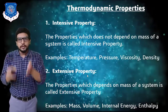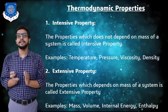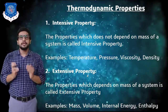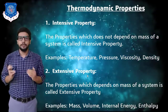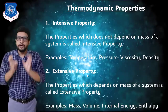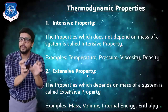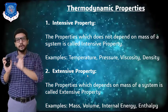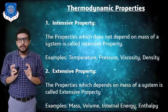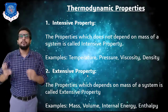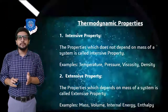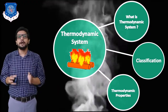The next type is extensive property: the property which depends on the mass of the system. Examples include mass itself, volume, internal energy, and enthalpy. Since density equals mass divided by volume, and density remains fixed at 1000 kg/m³ for water, when mass changes — 1 kg, 2 kg, or 3 kg — the volume changes correspondingly, making volume an extensive property. Internal energy and enthalpy are also extensive properties. In the next session we will discuss the laws of thermodynamics. Thank you all.